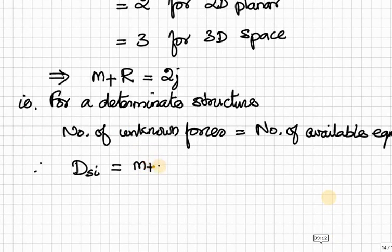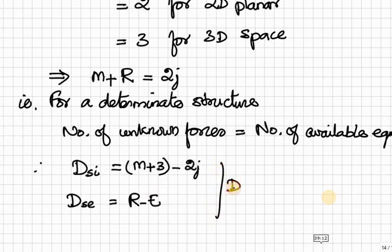Therefore, from this concept, we can derive the statistical indeterminacy internally as Dsi equals M plus 3 minus 2J. And, Dse equals R minus E. Therefore, the total is the summation of this or M plus R minus 2J.